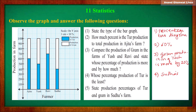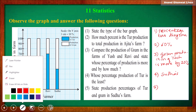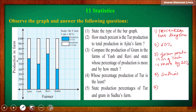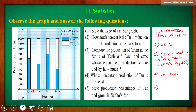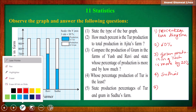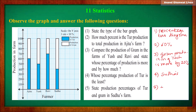Question five: state the percentage of tur and gram of Sudha's farm. Observe Sudha's farm: tur production is 40%, and gram production is 100 minus 40% = 60%. So Sudha's tur production is 40% and gram production is 60%.